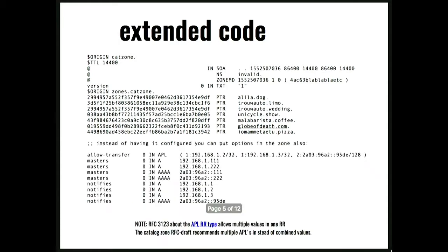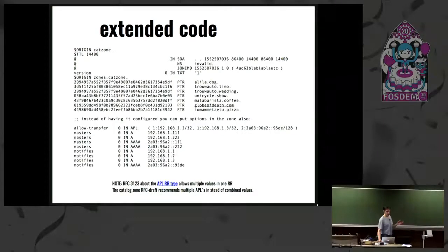What I did is extend it a bit. At the moment only BIND supports catalog zones, and you want to use this concept in other daemons too. With the additional section at the bottom, you can iterate over the zone. You can see additional config like your masters, where to allow notifies from, or allow transfer from.